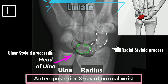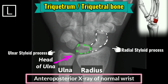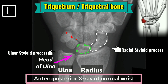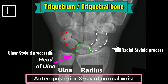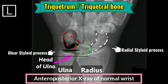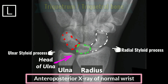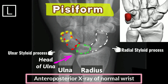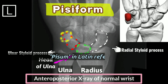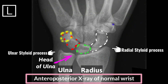The triquetral bone, also called triquetrum, is located on the medial side of the wrist on the ulnar side of the hand, but does not articulate with the ulna. It connects with the pisiform, hamate, and lunate bones. The smallest carpal, which is a sesamoid bone, is called the pisiform — derived from the Latin word meaning pea. It is located in the flexor carpi ulnaris wrist tendon.